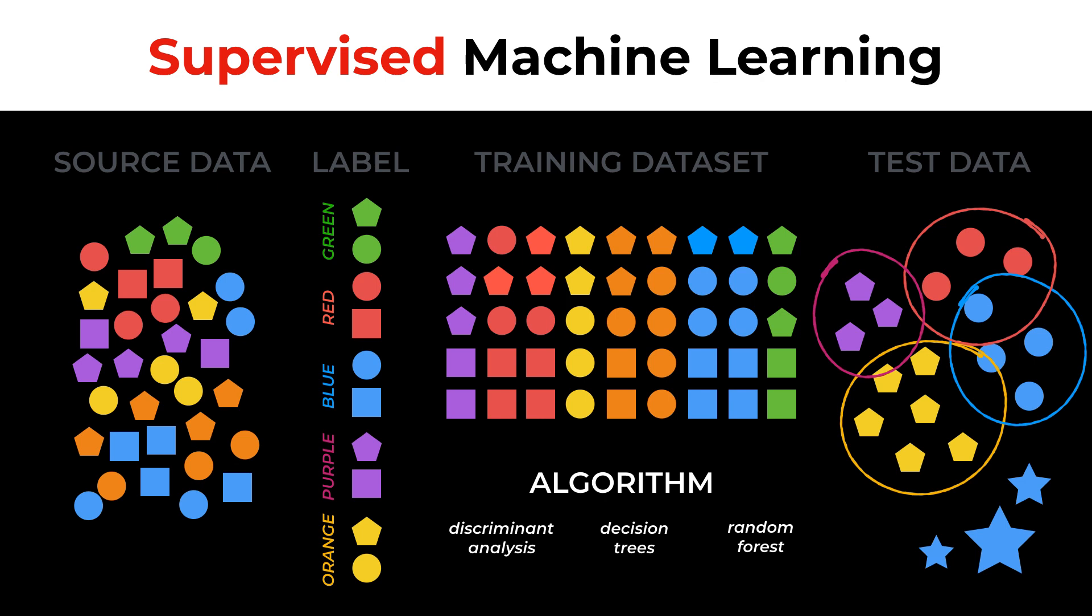New data will have to be assigned with a class that is present in the training dataset. So if something does not fit the model, such as the star on the bottom right, model accuracy will be reduced.